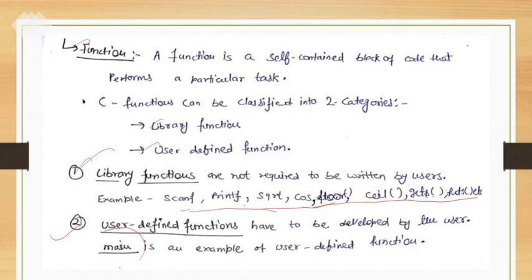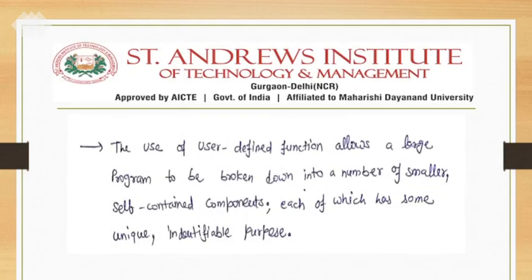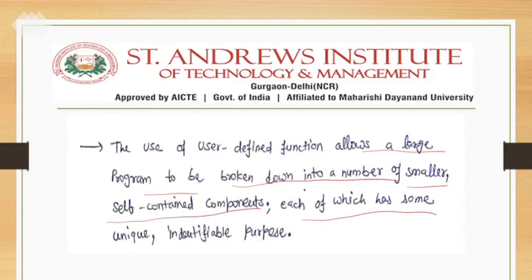What do you mean by user-defined? For example, main — main is a function. The main keyword name is predefined, but the functionality inside the block of the main function is defined by the user itself. The use of user-defined functions allows a large program to be broken down into smaller pieces, because if you have a larger program it is difficult to execute and understand in a better manner.